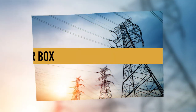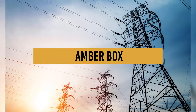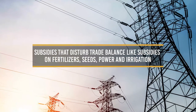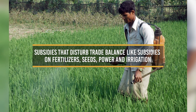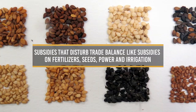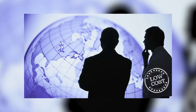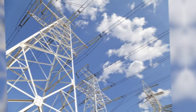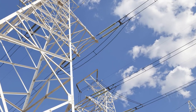The only category that has limitations is the amber box. Amber box subsidies are those that disturb trade balances, such as subsidies on fertilizers, seeds, power, and irrigation. By this, a country's products become cheaper than others in the international market. So WTO sets a limit on these kinds of subsidies.